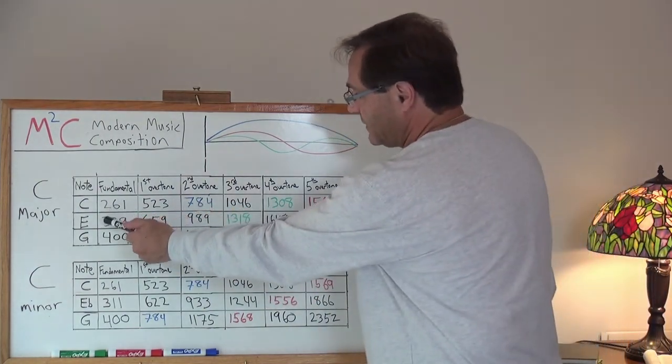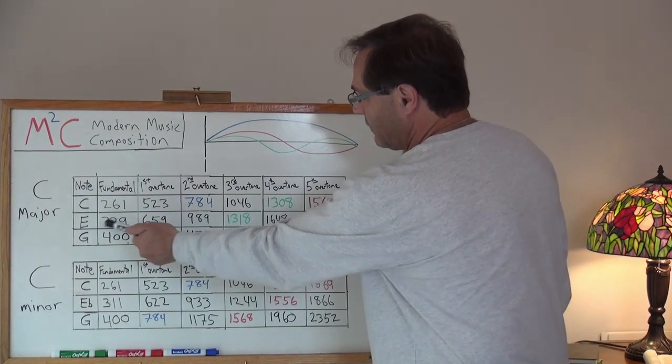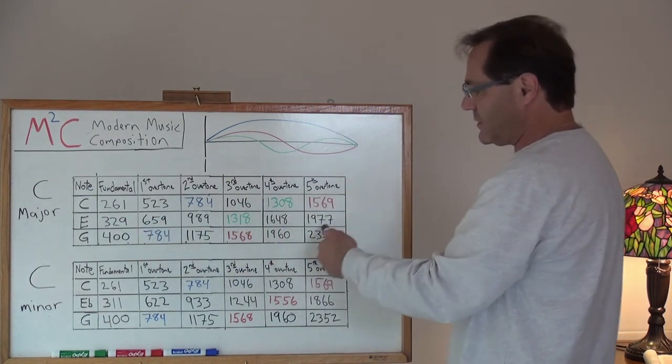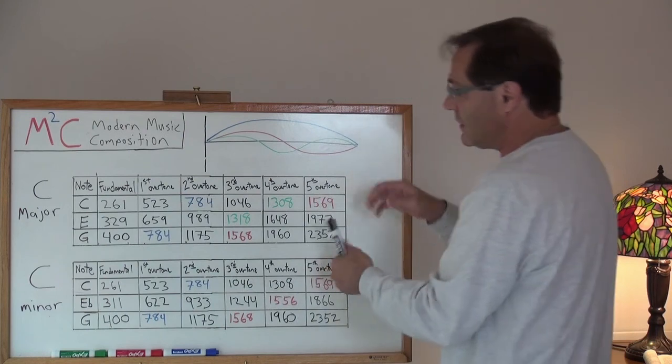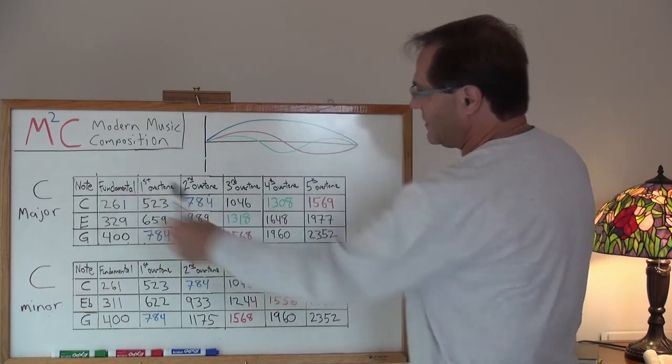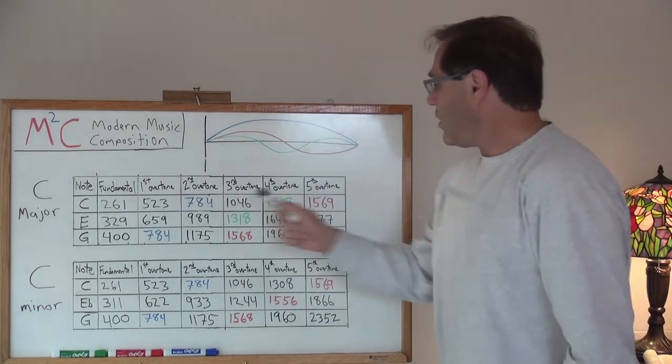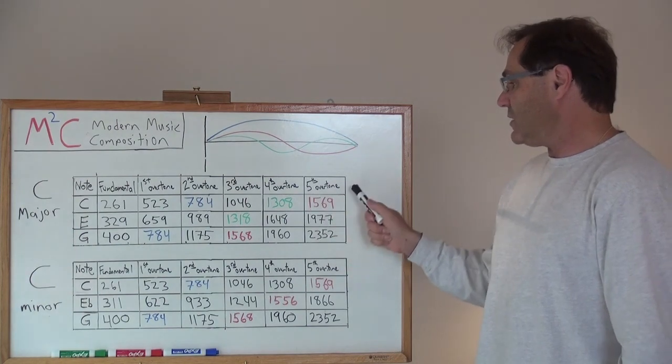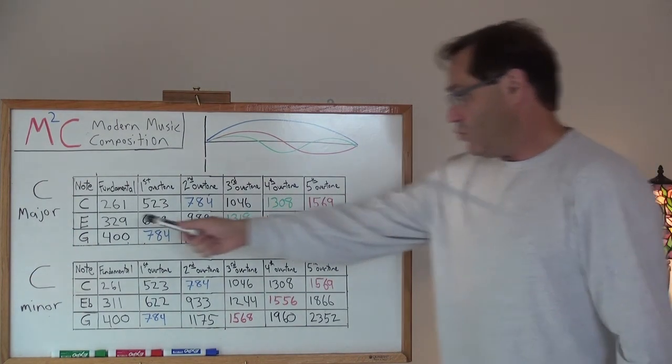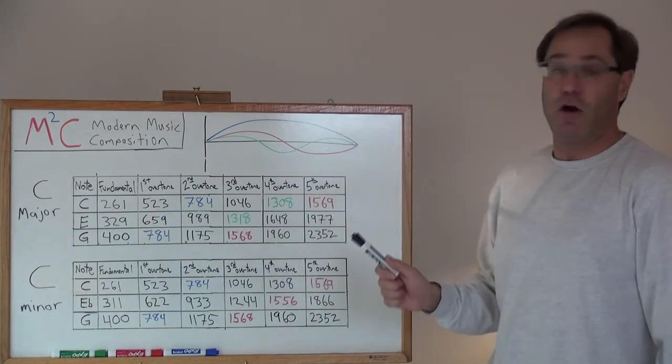So, I've calculated the—well, given the fundamental for E, I've calculated all the overtones and likewise for G. So, there's C major in terms of all the frequencies associated with these notes up to the 5th overtone.